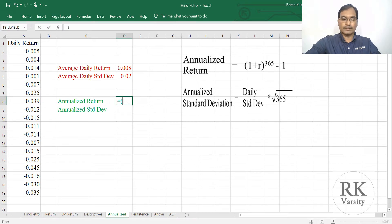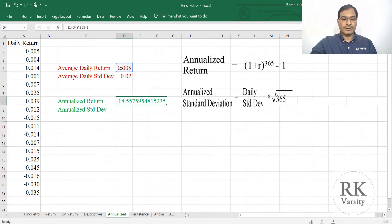This equals to 1 plus average daily return, then rise to the power of 365, then minus 1, press enter. Now your annualized daily return is 18.55 or we can say 18.56%.